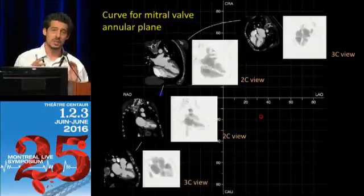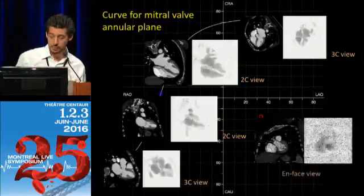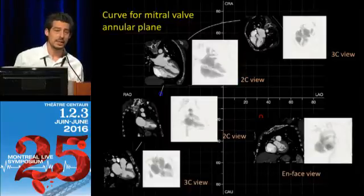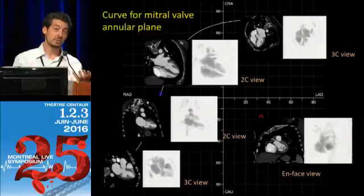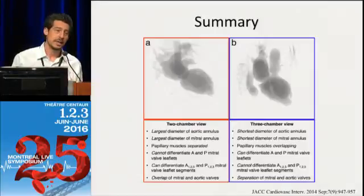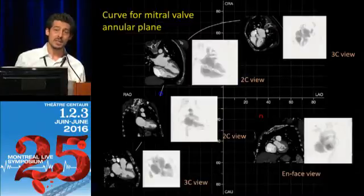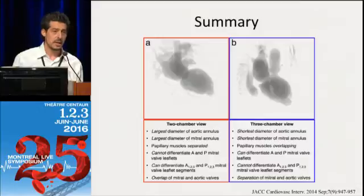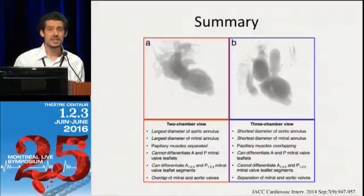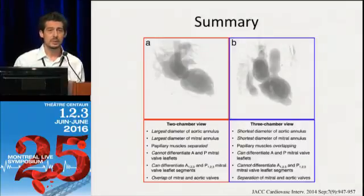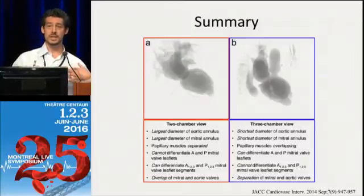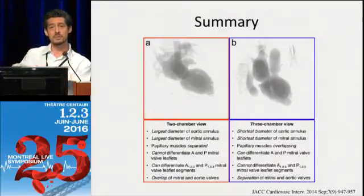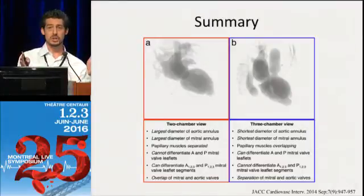An extreme LAO cranial is the same as an extreme RAO caudal except the images are mirror images of each other. For the mitral valve, the on-face view is in the opposite quadrant — an LAO caudal view. It's also very interesting when we teach our fellows at McGill that the coronary anatomy can also be learned in the chamber views of the heart. You can really summarize the anatomy of the heart based on the chamber view. We're made wide from an anterior-to-posterior perspective and narrow from a right-to-left perspective.